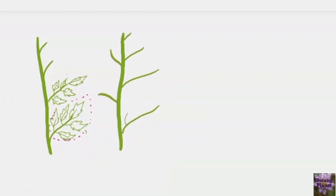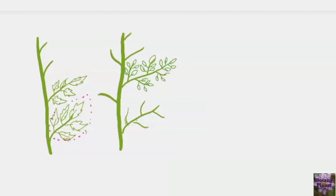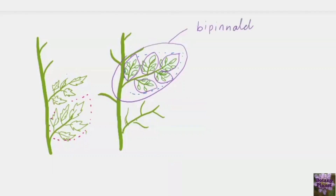An example of a unipinnately compound leaf is rose or Cassia. Drawing the structure of a bipinnately compound leaf, the main stem gives rise to a rachis, and the rachis again gives rise to a secondary rachis instead of giving rise to leaflets directly. The secondary rachis gives rise to different leaflets; their aggregation resembles a leaf. In this way, both the secondary and primary rachis give the appearance of a leaf — we call this type bipinnately compound leaves. An example is Acacia.